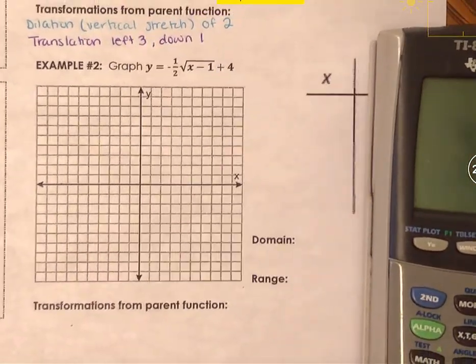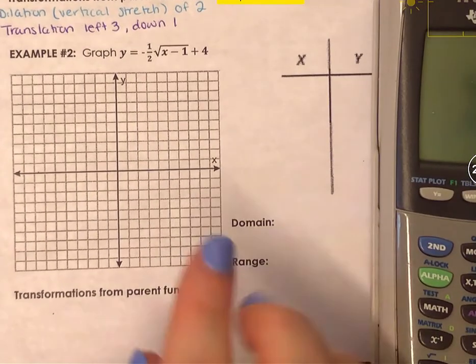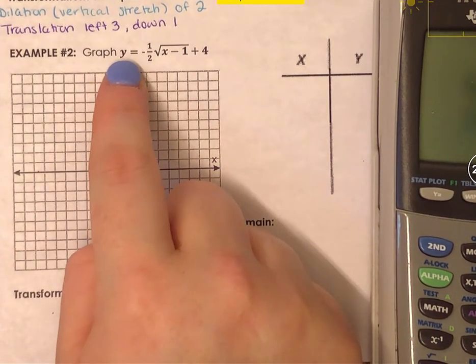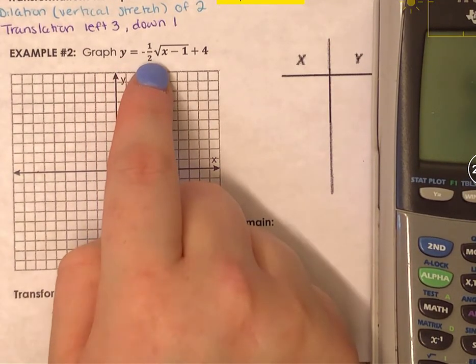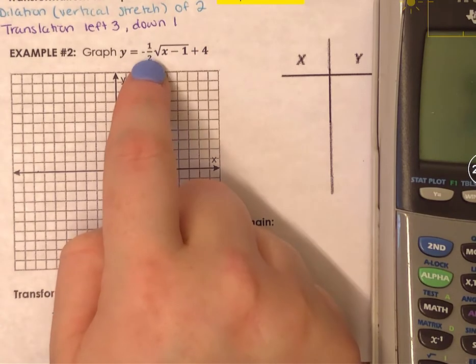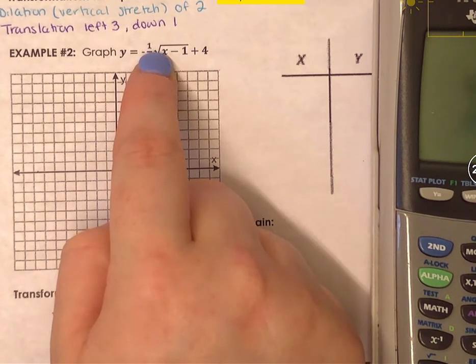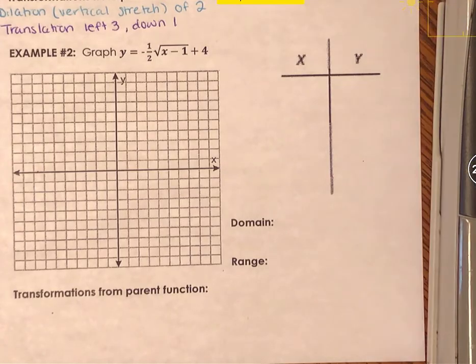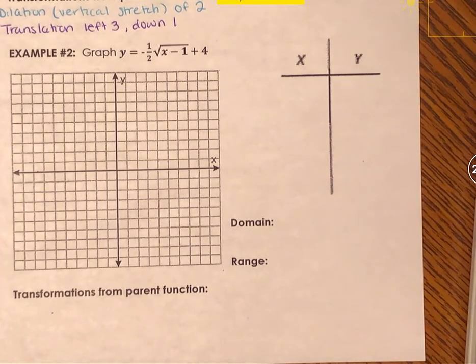I want to graph y equals negative 1 half square root of x minus 1, plus 4. This is a square root — an even root — and has a domain and range that is confined by h and k.